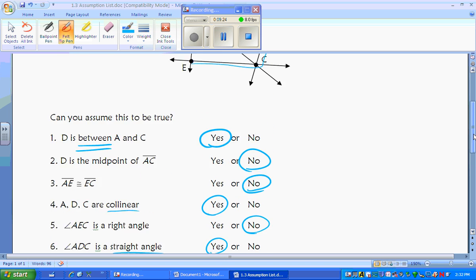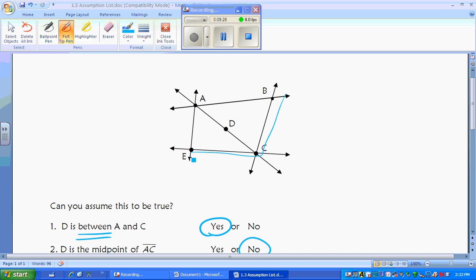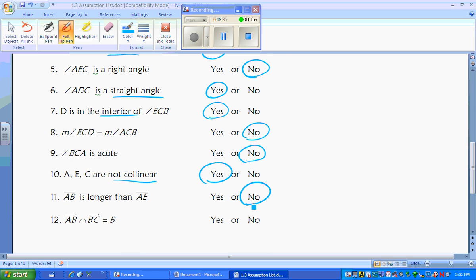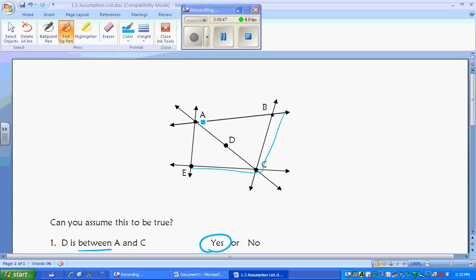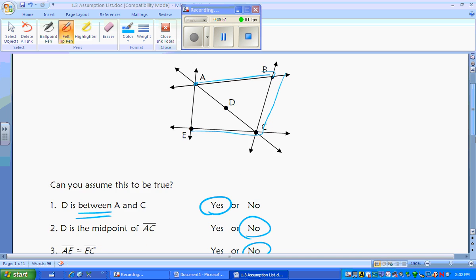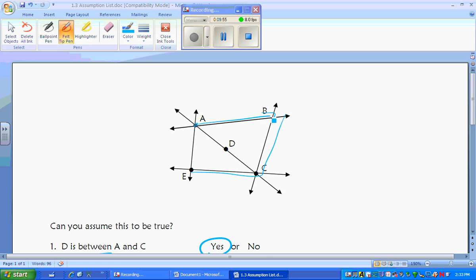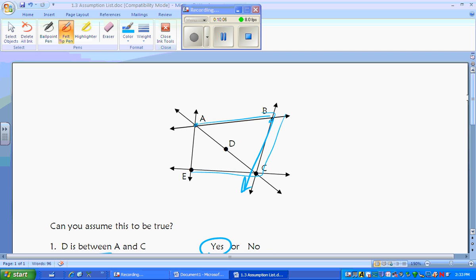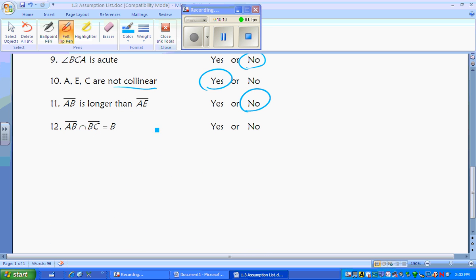AB is longer than AE. You can look at it, but maybe, once again, like I said, it's a bad drawing. So don't assume that they're congruent to each other. Don't do it. And AB intersects ray BC at B. Ray AB and ray BC intersect at point B. That is yes, and that's something you can see by looking at the diagram.